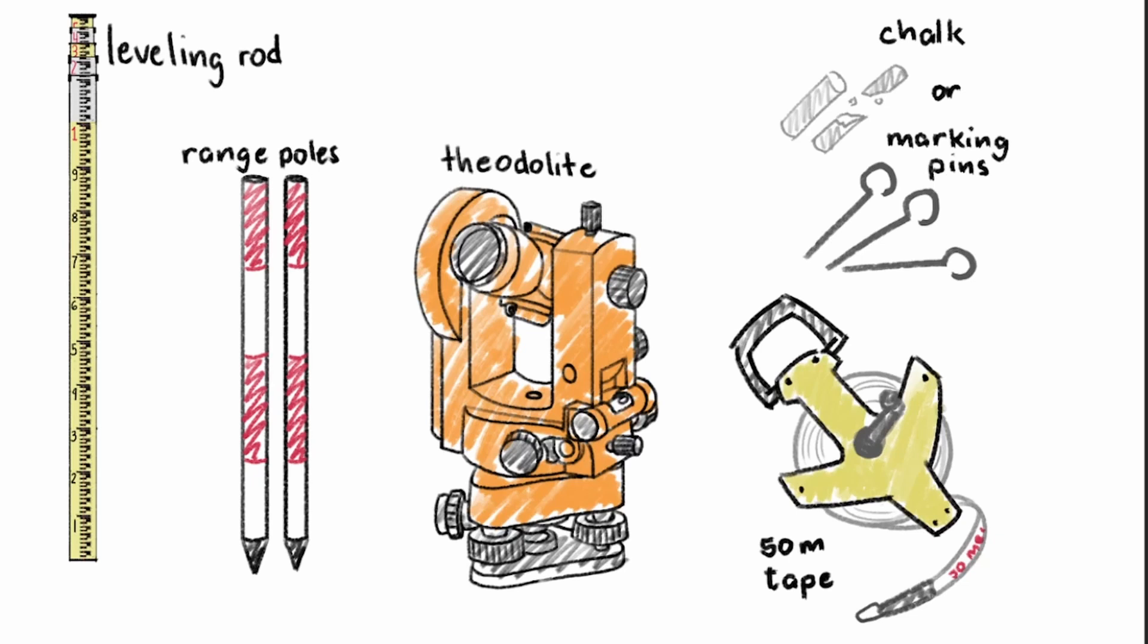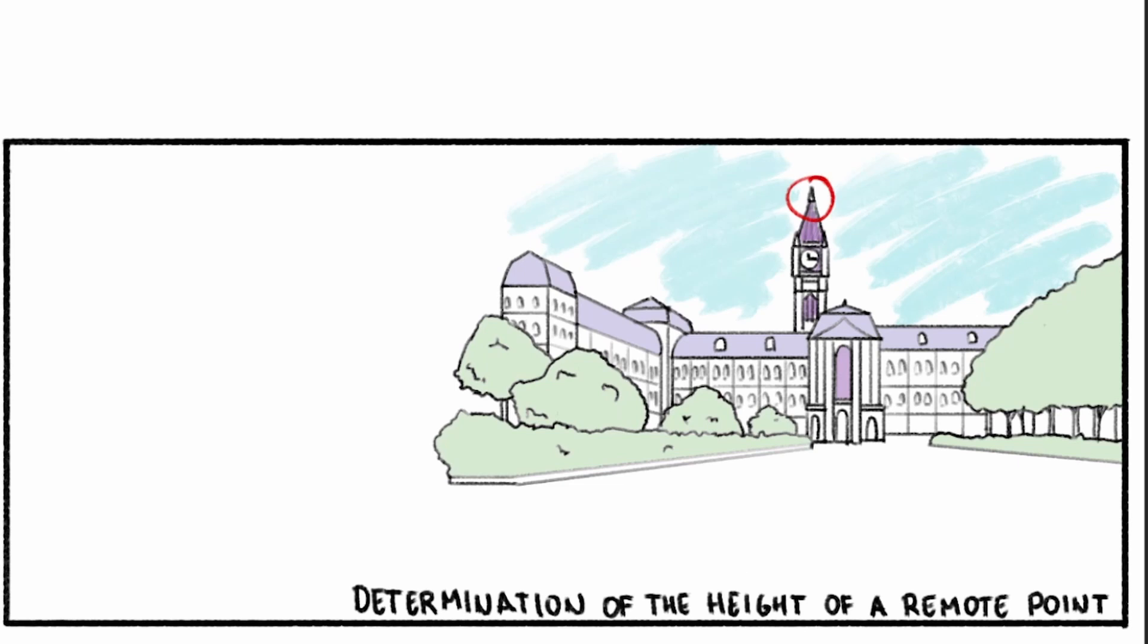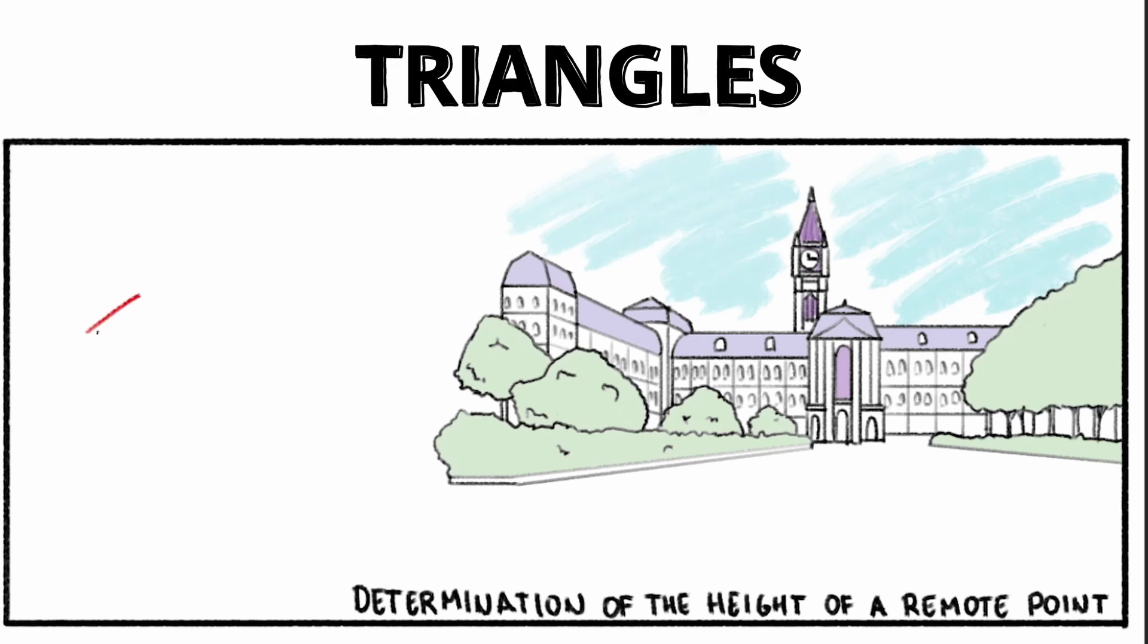For example, we want to get the height of this tower, but it's too far away to measure directly. To work around this issue, we can use the principles and equations for triangles in order to compute for the height.